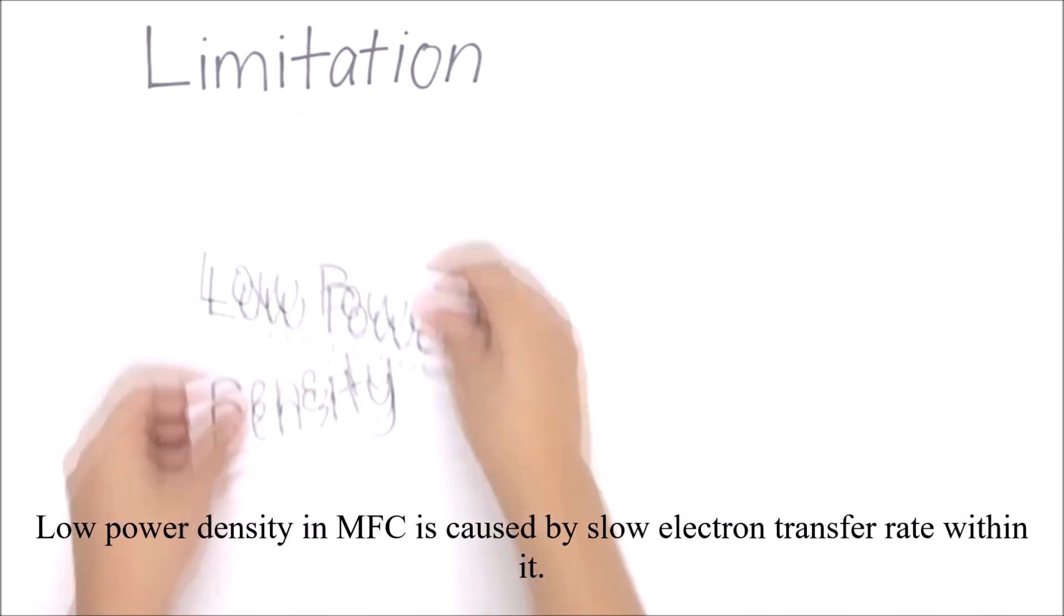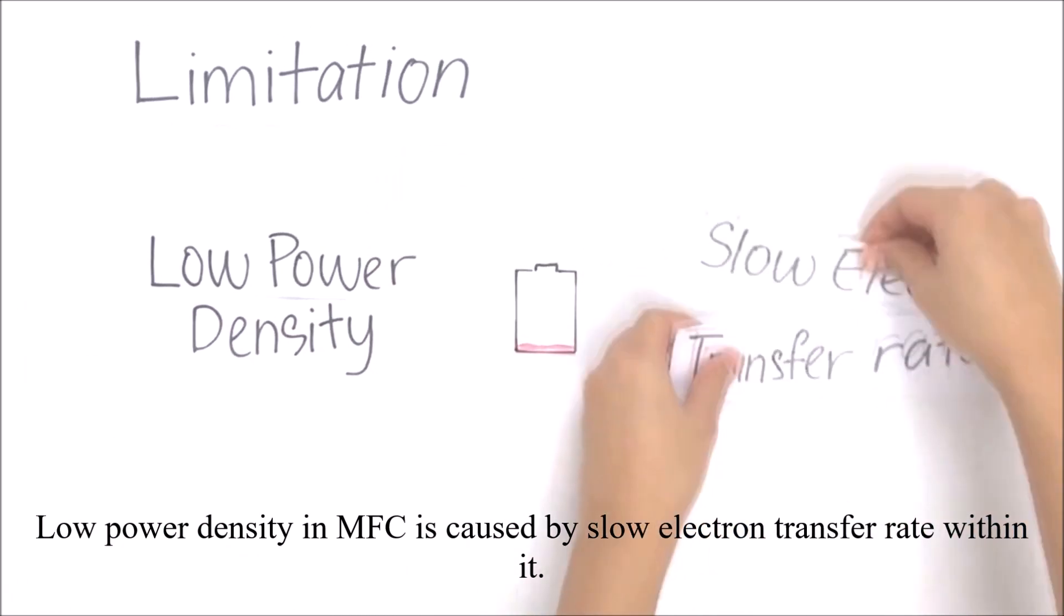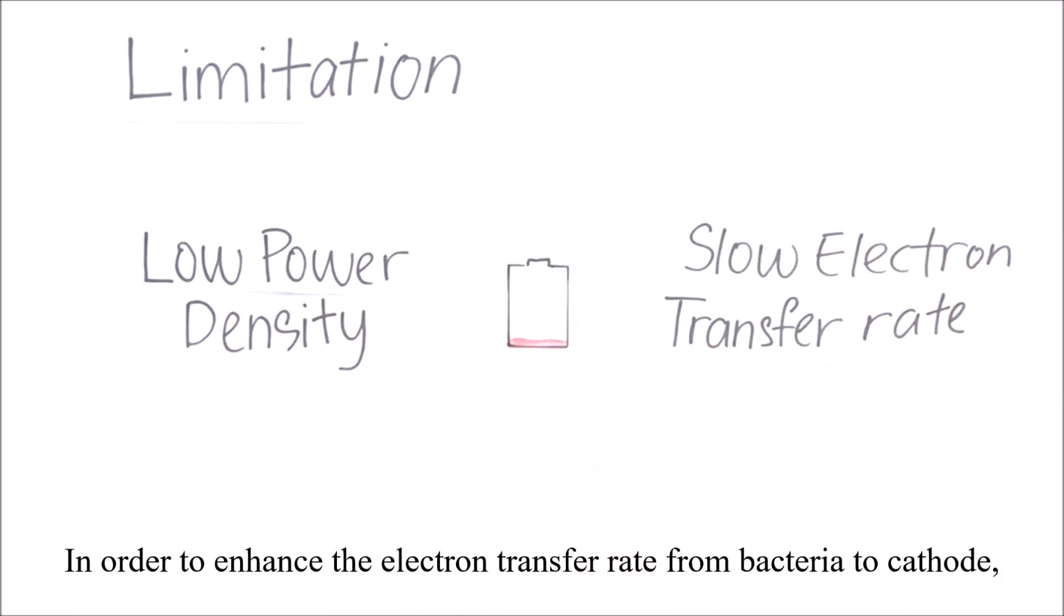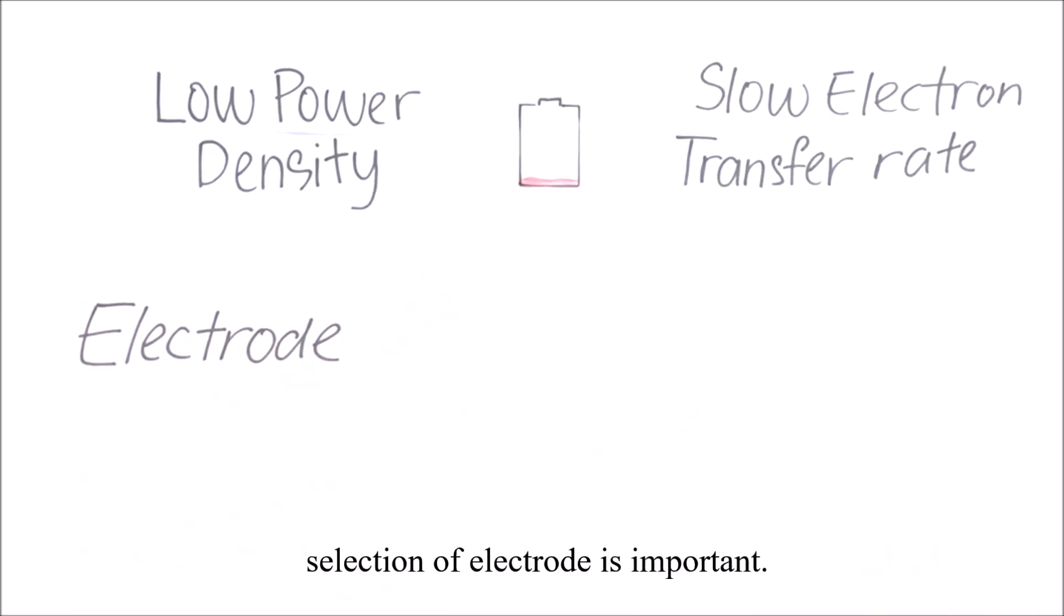Low power density in MFC is caused by a slow electron transfer rate within it. In order to enhance the electron transfer rate from bacteria to cathode, selection of electrode is important.